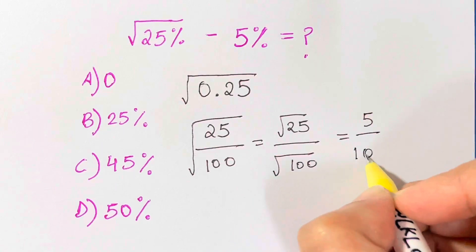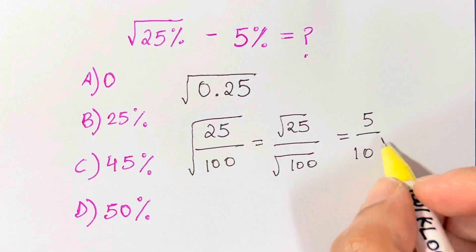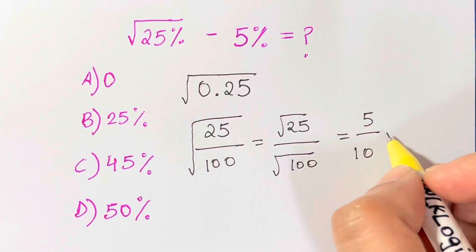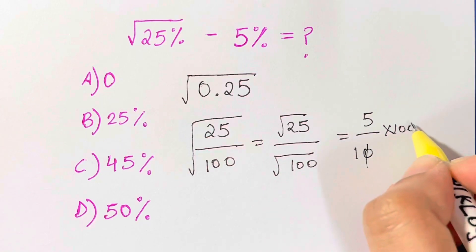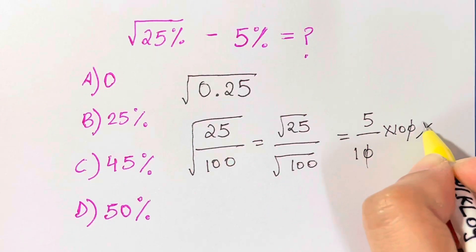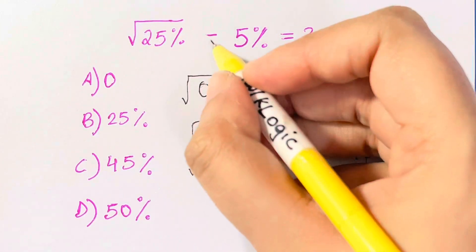Now 5 over 10 as a percentage. Whenever you want to convert a fraction to a percentage, just multiply by 100. The zero gets cancelled, it's 50%. 50% minus 5%, so let's subtract.